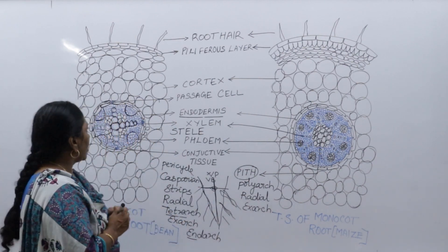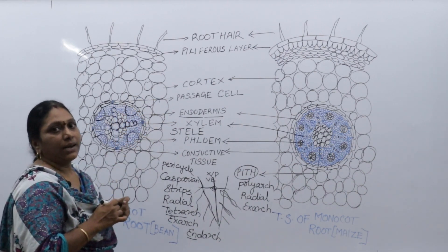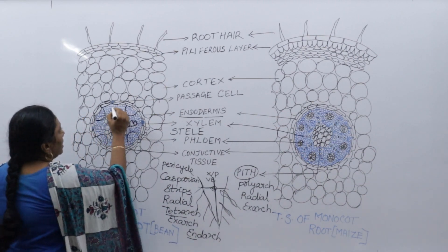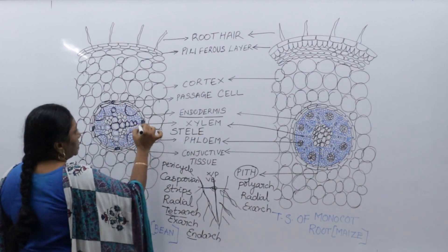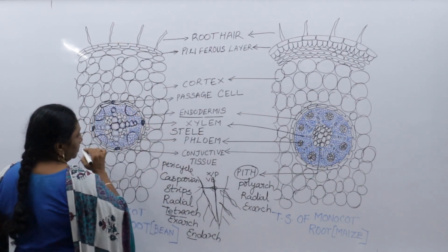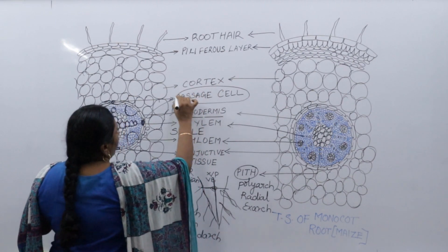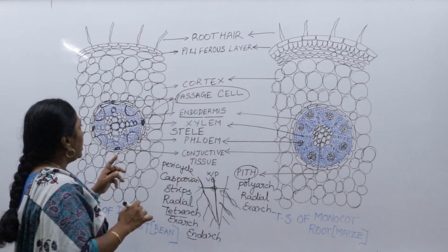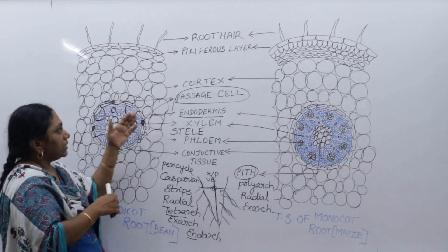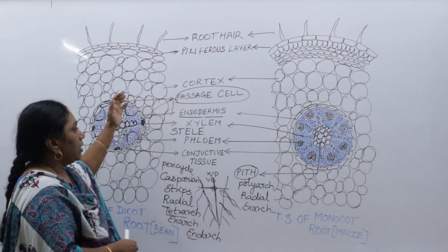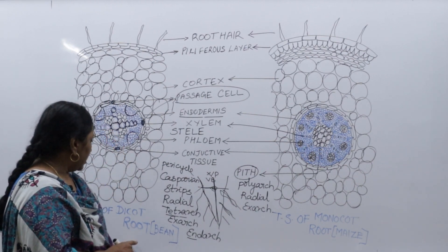In the endodermis there are casparian strip thickenings, but near the protoxylem areas there are no thickenings — instead there are some openings called passage cells. Passage cells are present in monocot root. Through these passage cells, water and minerals come in and go out — they allow movement from the cortical cells to the vascular bundles.